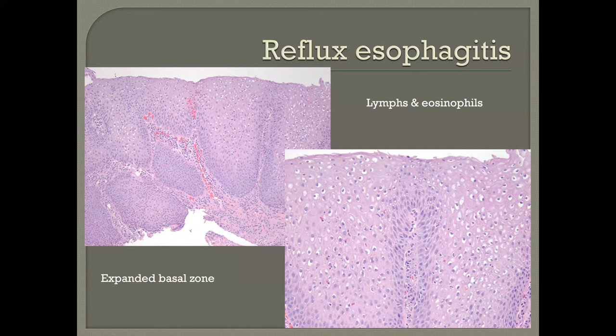Reflux esophagitis typically has two types of inflammatory cells. Most commonly lymphocytes, but if there's active injury, they will be associated with eosinophils — a few scattered eosinophils within the squamous mucosa. Accompanying this is an epithelial hyperplasia with proliferation of the basal zone and resulting elongation of the reedy papillae. These findings characterize reflux esophagitis.